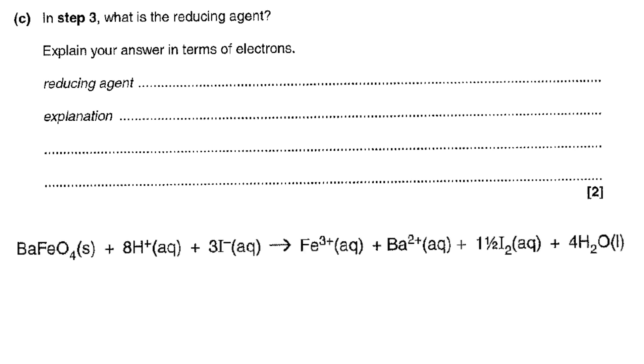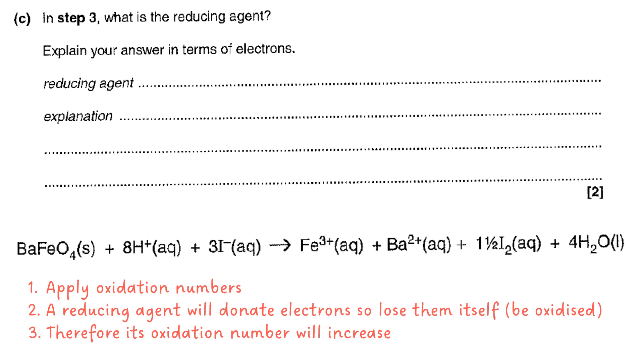So in step three we go back to the equation that's provided. And in terms of electrons means we need to think about what's gaining or losing electrons. So what's a reducing agent first of all? It will donate electrons so something else will be reduced. In doing so losing electrons itself. So that means it's oxidized. So its oxidation number will go up.